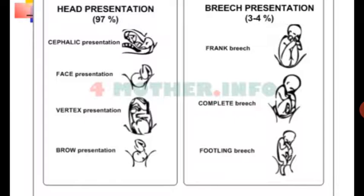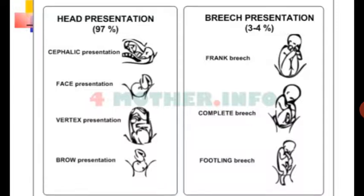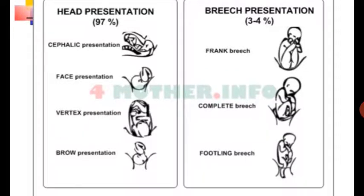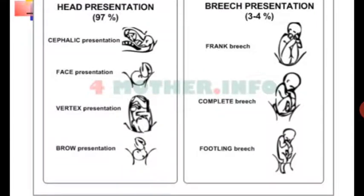To summarize the presentation types: vertex presentation, brow presentation, breech presentation, frank presentation, complete breech, and footling breech — these are the main presenting parts found in obstetric examination.